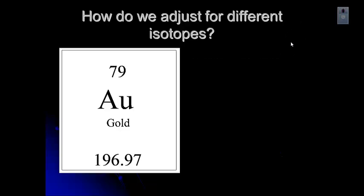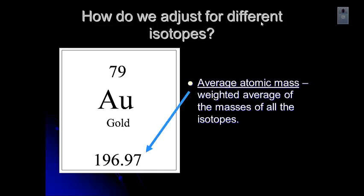Let's look at the periodic table again. We want to see how we adjust for those different isotopes. We use this average atomic mass. This number at the bottom of the little block on the periodic table, that's the weighted average of the masses of all the different isotopes of that particular element. So for gold, there are some isotopes that have a mass number of 196, some that have a mass number of 197. There may be 195, 198, 199. But when you take that average atomic mass, that's the one that we use when we're looking at atomic masses of elements.